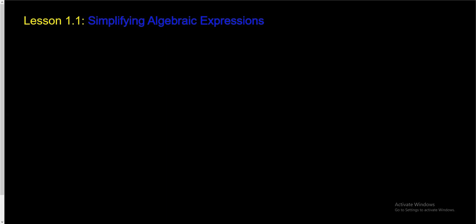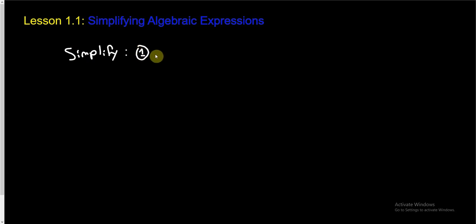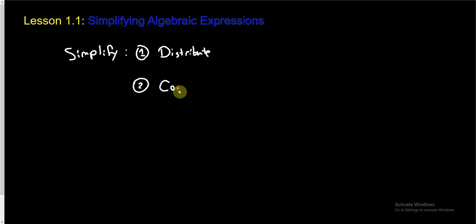Hello, welcome to our first lesson. This whole first chapter is going to focus on solving equations, but before we can get to solving equations, we need a skill to work on beforehand. That skill is simply being able to simplify algebraic expressions. For this course, it comes down to two steps, and the easiest way to remember them is to think DC, like Washington DC. The D stands for distribute and the C stands for combine.